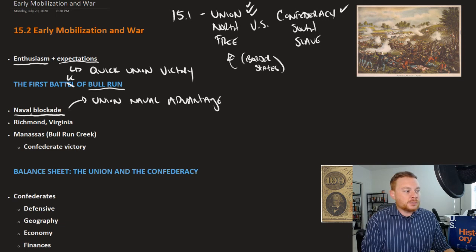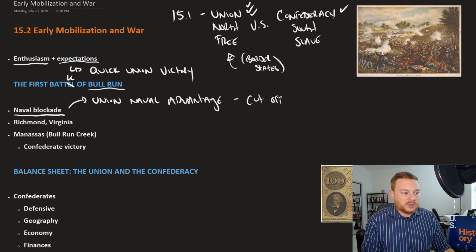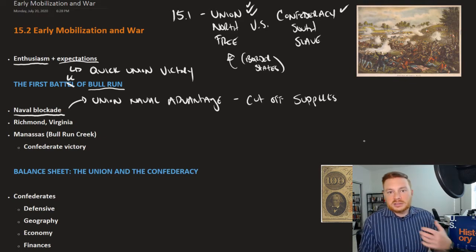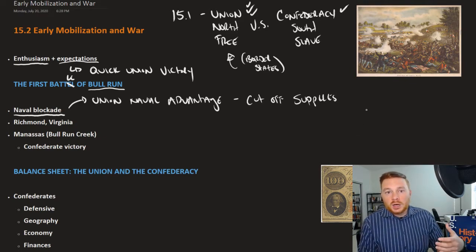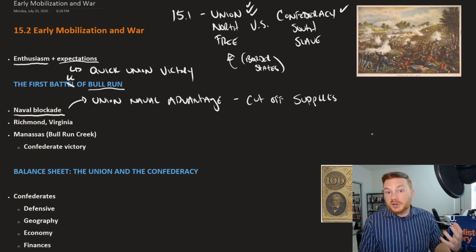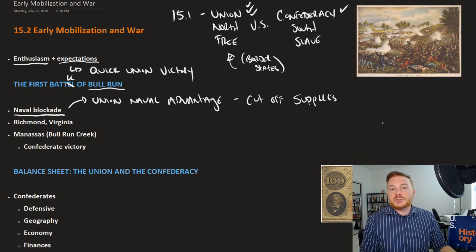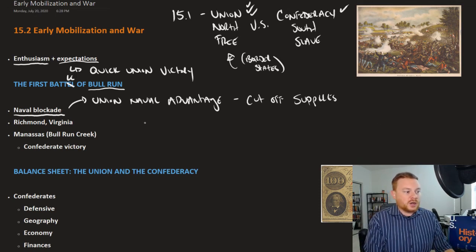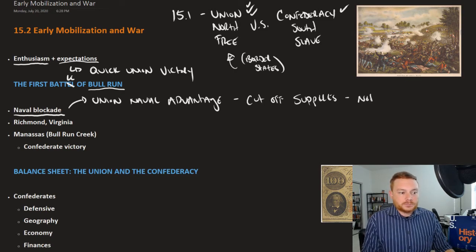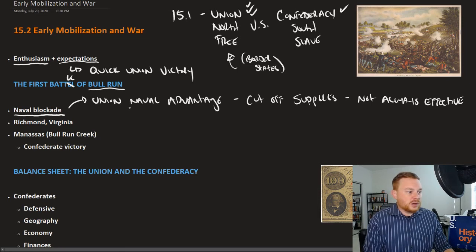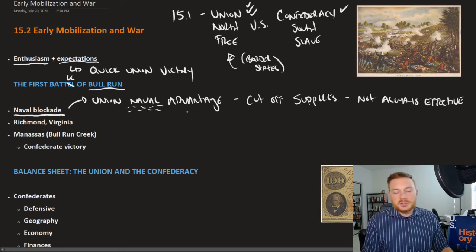The Union proceeded to implement a naval blockade on the South to cut off vitally needed supplies the South relied upon — most notably weapons, clothing, boots, and bullets. The Southern economy was heavily based on cotton, so it really required the South to import goods. Even though the Union tried to block off the South, it wasn't always effective, merely because the South was just so large. In any major naval engagements, the Union typically had the advantage.